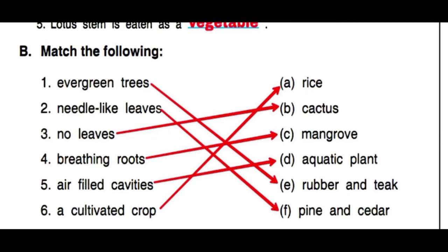Now we will match the question words with correct statements. Evergreen trees — rubber and teak are evergreen trees, so we will match those. Needle-like leaves are found in pine and kedar, so match it with pine and kedar.